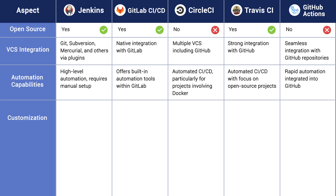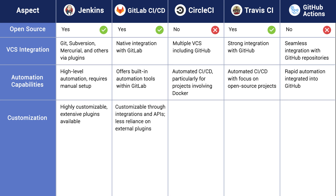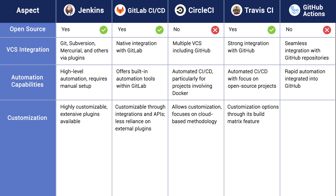What about customization? Jenkins is highly customizable and has extensive plugins available. GitLab CI/CD is customizable through integrations and APIs, and has less reliance on external plugins. CircleCI allows customization and focuses on cloud-based methodology. Travis CI offers customization options through its build matrix feature. And GitHub Actions offers customizable workflows within the GitHub environment.